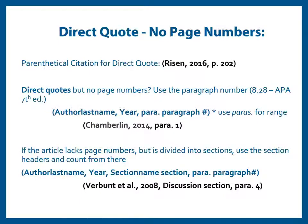Remember, APA format only requires page numbers when using direct quotes. Of course, not all sources will have page numbers. APA format requires you to provide some information about where in the source the direct quote was located. For sources like web pages, which have no page numbers, provide the paragraph number the quote appears in, using the abbreviation para. (para-period) instead of p. in front of page numbers. If your source is divided up with clear sections, you can list part of the section name along with the word 'section' in lowercase and count from there.